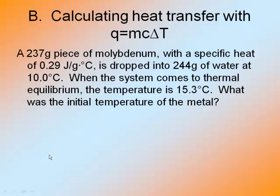A 237 gram piece of molybdenum with a specific heat of 0.29 joules per gram degree Celsius is dropped into 244 grams of water at 10 degrees Celsius. When the system comes to thermal equilibrium, which means they have the same temperature, the temperature is 15.3 degrees Celsius. What was the initial temperature of the metal?